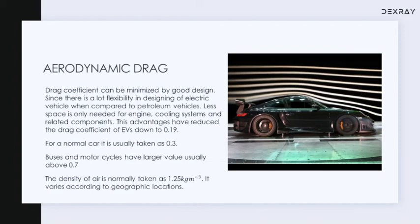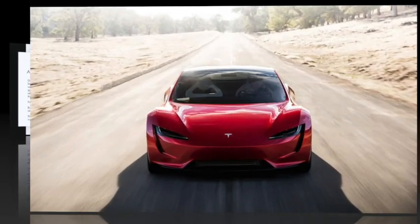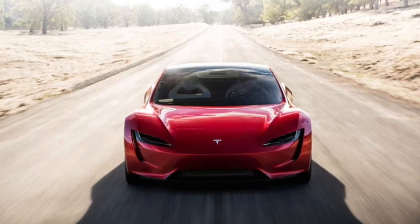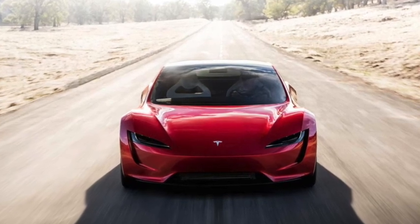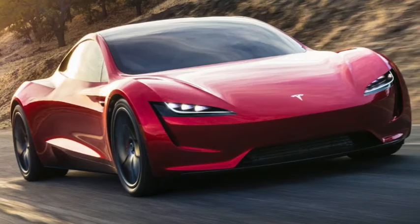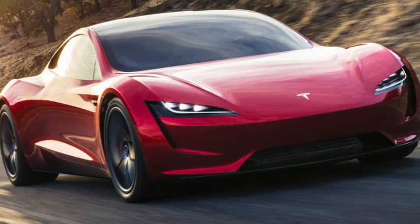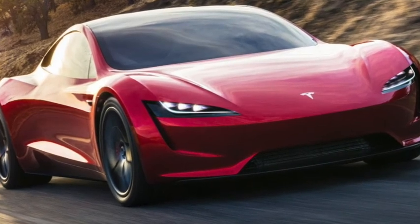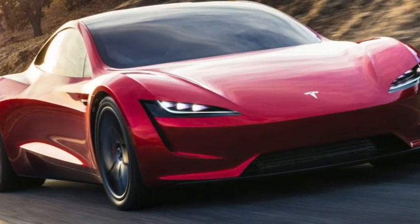While talking about aerodynamic drag, it is worth mentioning the Tesla Roadster, popularly known as the world's fastest electric car. While designing this car, they even avoided the side mirrors to make the aerodynamic drag as minimum as possible.